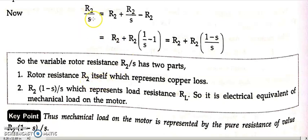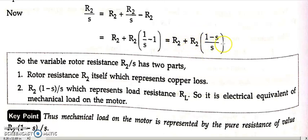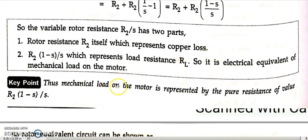Hello guys. In the last class we discussed how R2/S is resolved in terms of R2 plus R2 into bracket (1 minus S)/S, where R2 represents the copper loss and the remaining R2 into bracket (1 minus S)/S represents the equivalent electrical mechanical load of the motor. This second part is also called the load resistance RL, where RL equals R2 into bracket (1 minus S)/S.